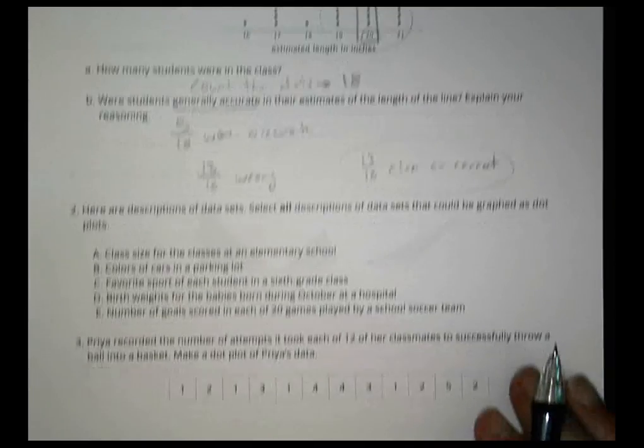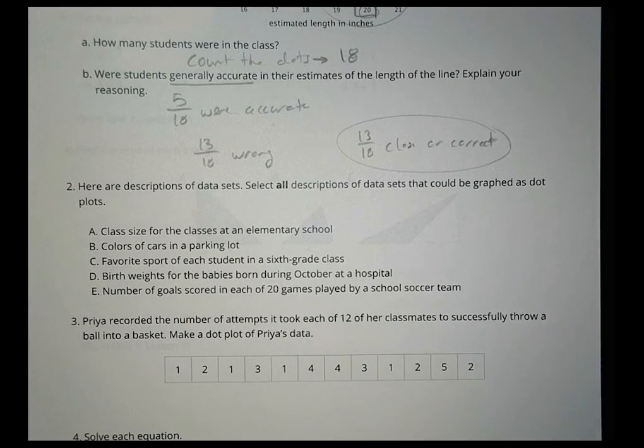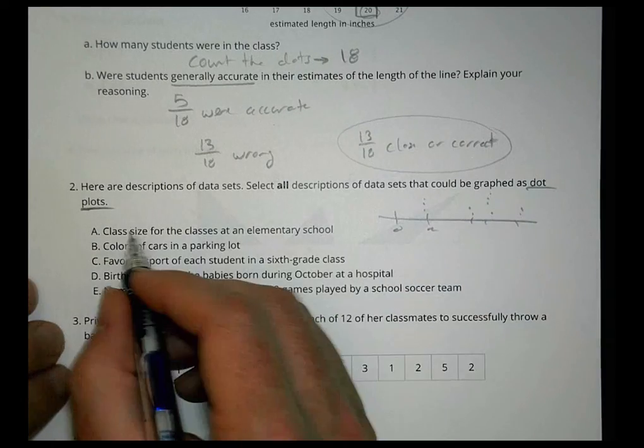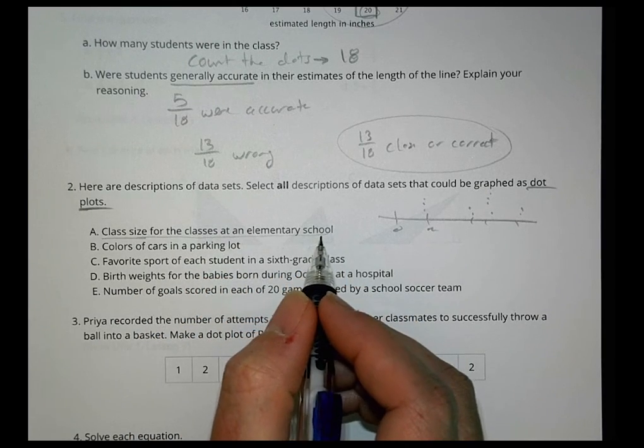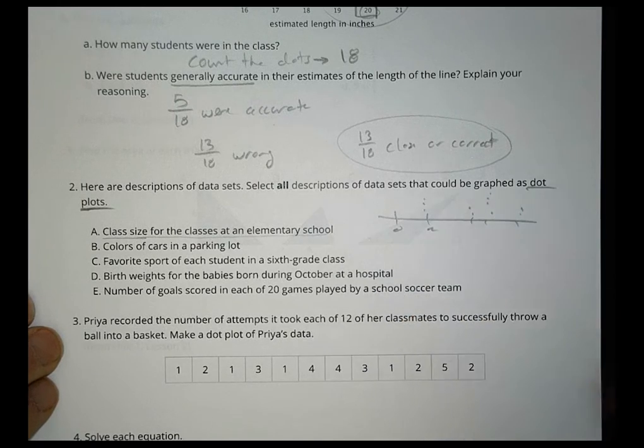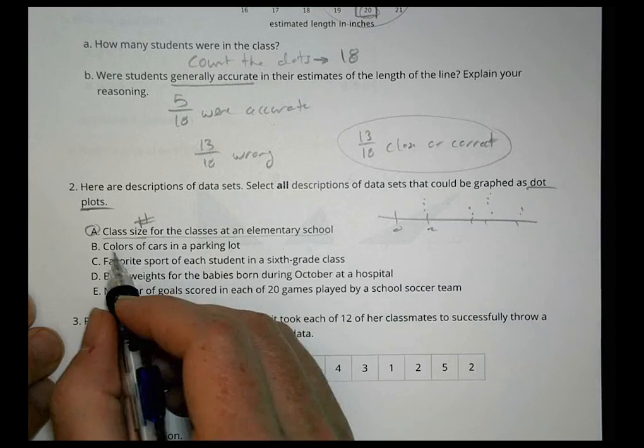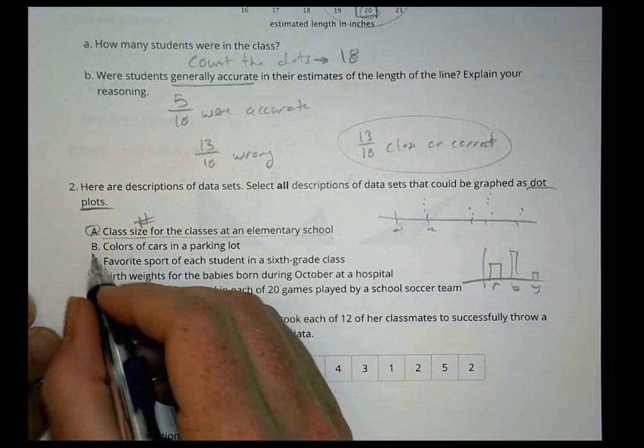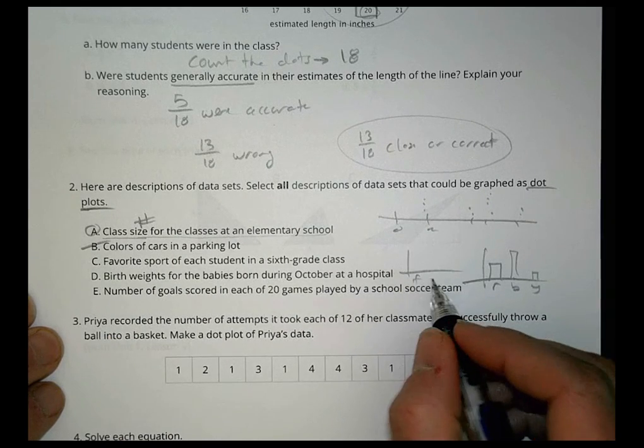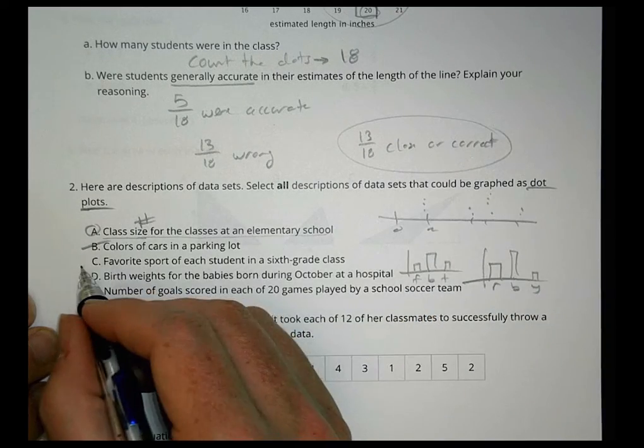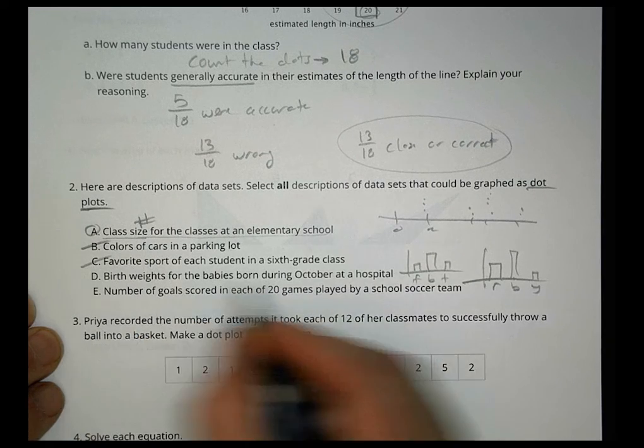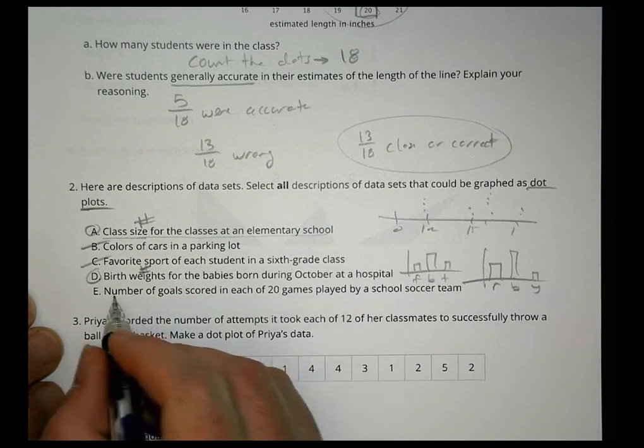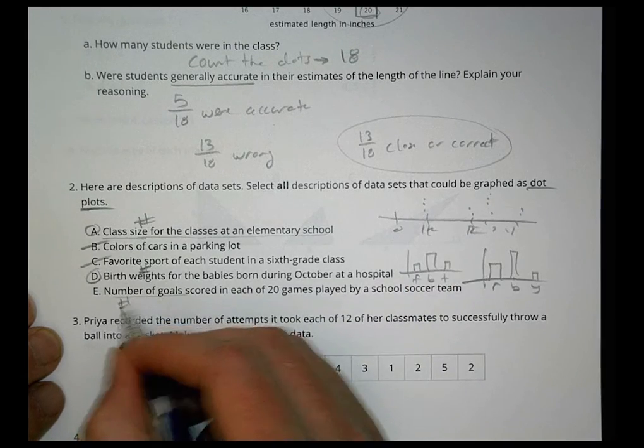Number two, here are descriptions of data. Select all descriptions of data sets that could be graphed as dot plots. Remember the dot plot is going to be zero, one, two, right, and then dots to count those things up so you can compare things. Class size for the classes at an elementary school - every class is a little different, so you might have a class of 20, class of 21. That could work. You're talking about class size, talking about numbers. Sounds good. The colors of cars in the parking lot - that sounds more like you're going to have red, blue, yellow, and you could do more of a bar graph there. So no. Favorite sport of each student in sixth grade - that sounds like football, basketball, tennis. That sounds more like one of these kind of charts. So no. The birth weights of babies born during October - you might have 12 ounces, 15 ounces. Yep, weights are numbers. Makes sense for dot plot. Number of goals scored in 20 games of a soccer team - zero, one, two, three. That's a number. Makes sense for dot plot.